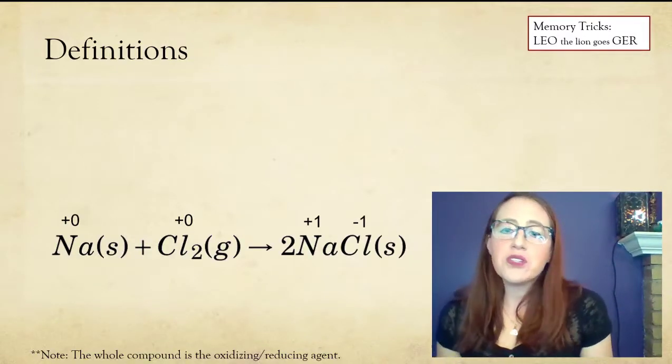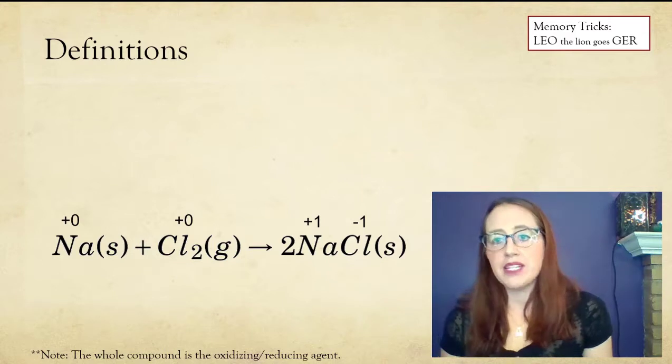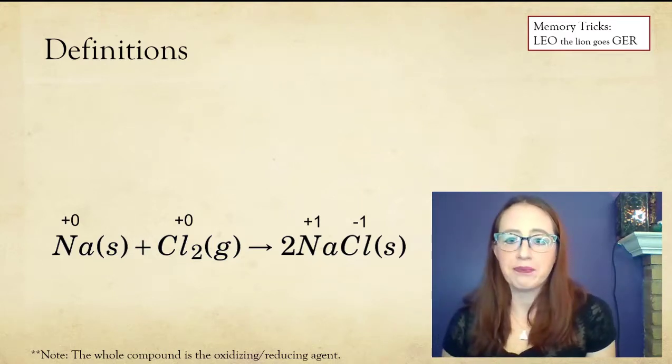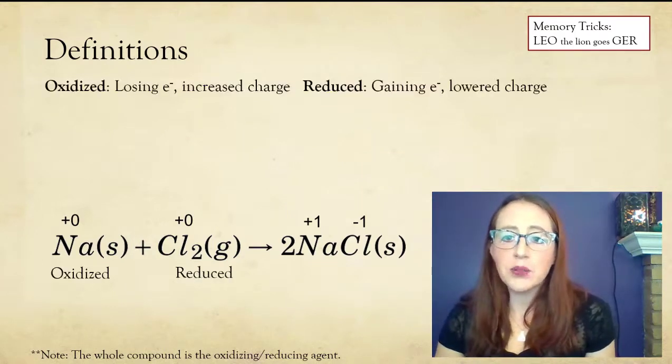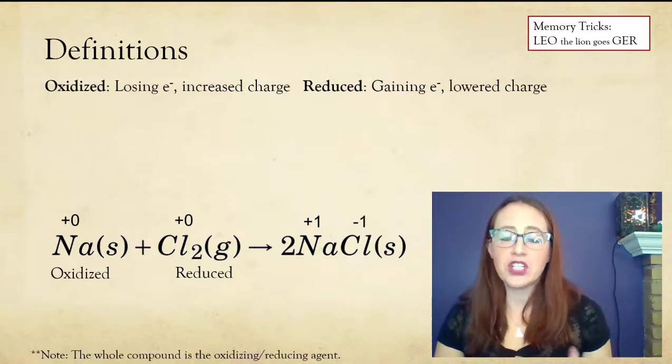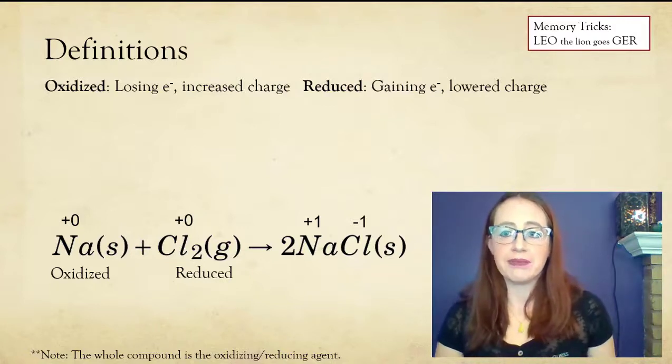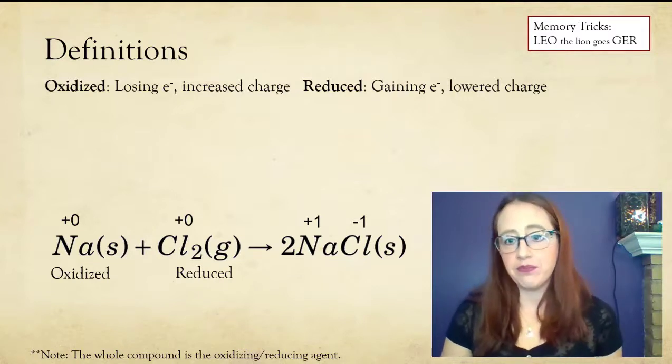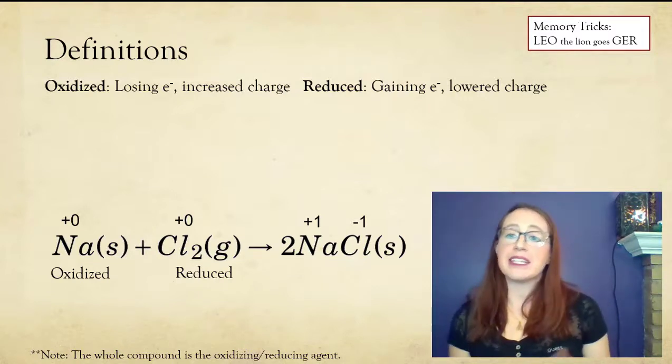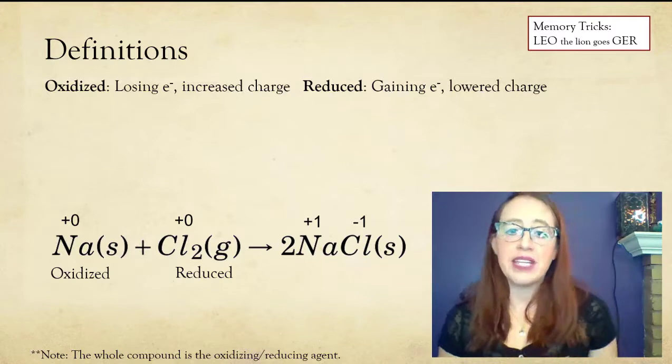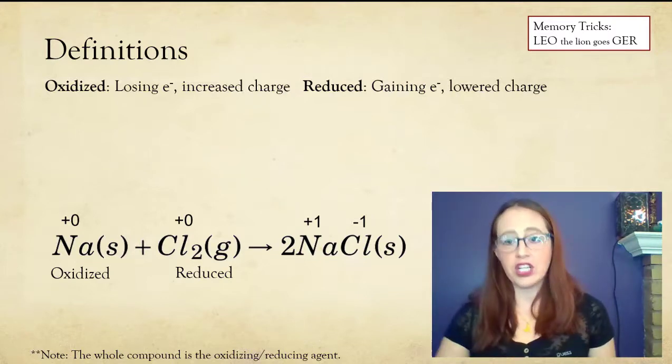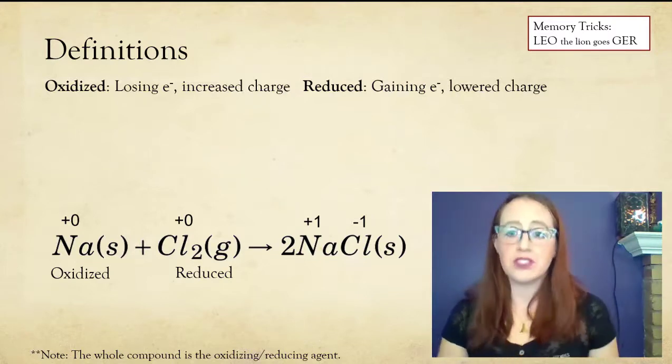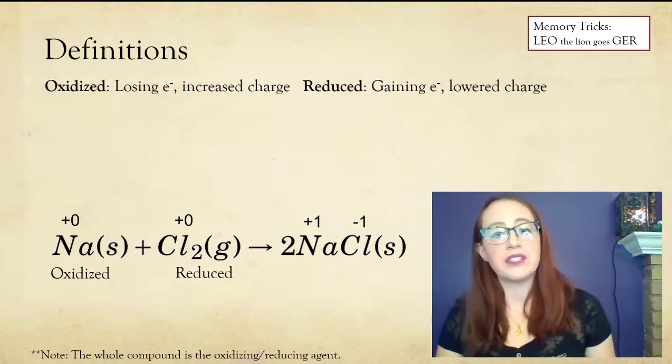We also need to have terms to help us talk about these reactions. When species lose electrons, their charge increases. This loss of electrons we call oxidation. When a species gains electrons, the extra negative charges lower its charge, or reduce its charge. Therefore, we call this reduction.